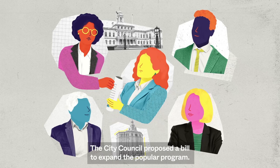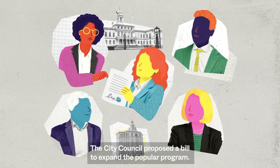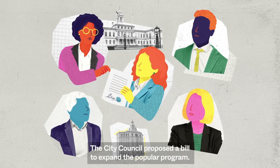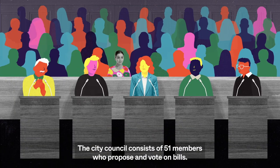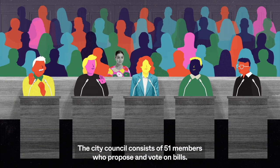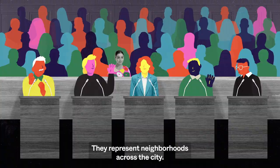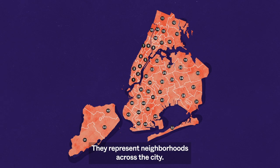The city council proposed a bill to expand the popular program. The city council consists of 51 members who propose and vote on bills. They represent neighborhoods across the city.